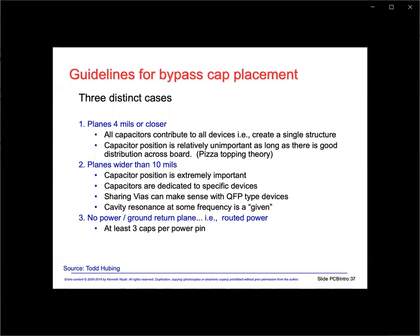Dr. Todd Hubing has a set of guidelines for where decoupling capacitors need to be placed. If the power and return planes are less than 4 mils apart, then the location of decoupling capacitors doesn't matter as much, and they can merely be sprinkled around the board evenly. However, if the power and return planes are greater than 10 mils apart, the capacitor position becomes very important, and each IC will need one or more decoupling capacitors. Note also that wide spaced power and return planes can lead to cavity resonances, which can accentuate emissions. If there are no power return planes — for example, if the power is routed — then he advises at least three decoupling capacitors per power pin.